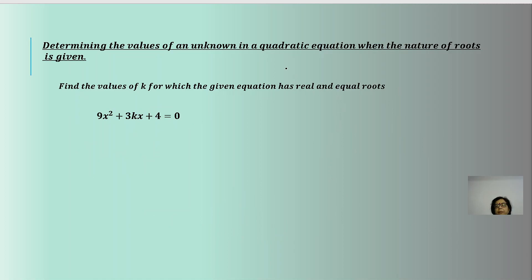Now let us try another type of question: determining the values of an unknown in a quadratic equation when the nature of roots is given. Here the nature of the roots is given as real and equal, so we equate the discriminant to 0: b² - 4ac = 0. Here a = 9, b = 3k, and c = 4.